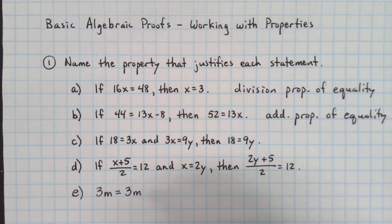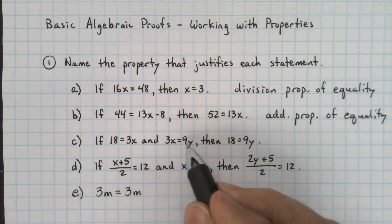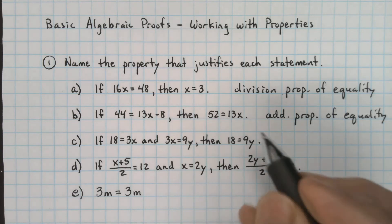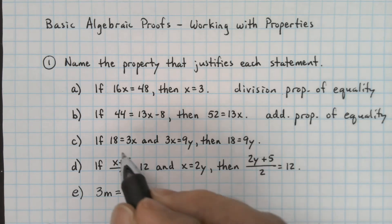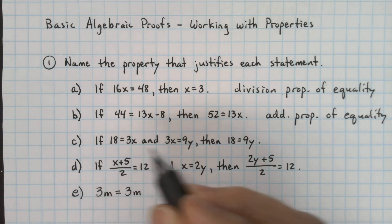In part C, 18 is equal to 3x, and 3x is equal to 9y. And then over here, instead of the 3x equal to 9y, we have 18 equals 9y.